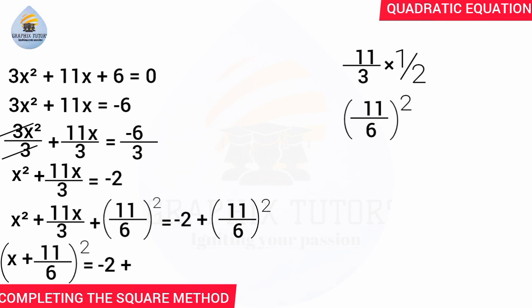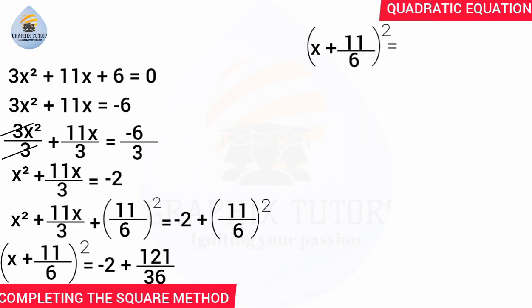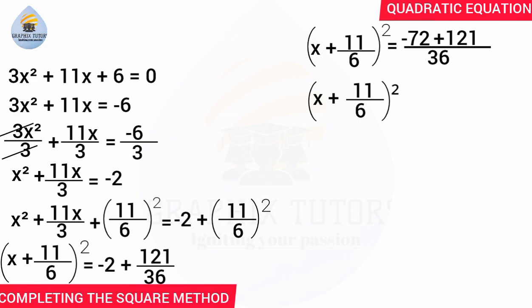Opening the bracket on the right side: 11 squared is 121, and 6 squared is 36. We then find the LCM of the right hand side. The LCM is 36. So 2 times 36 gives 72, with the negative making it minus 72. Plus 121 over 36. So we have (x plus 11 over 6) squared equals minus 72 plus 121 all over 36.